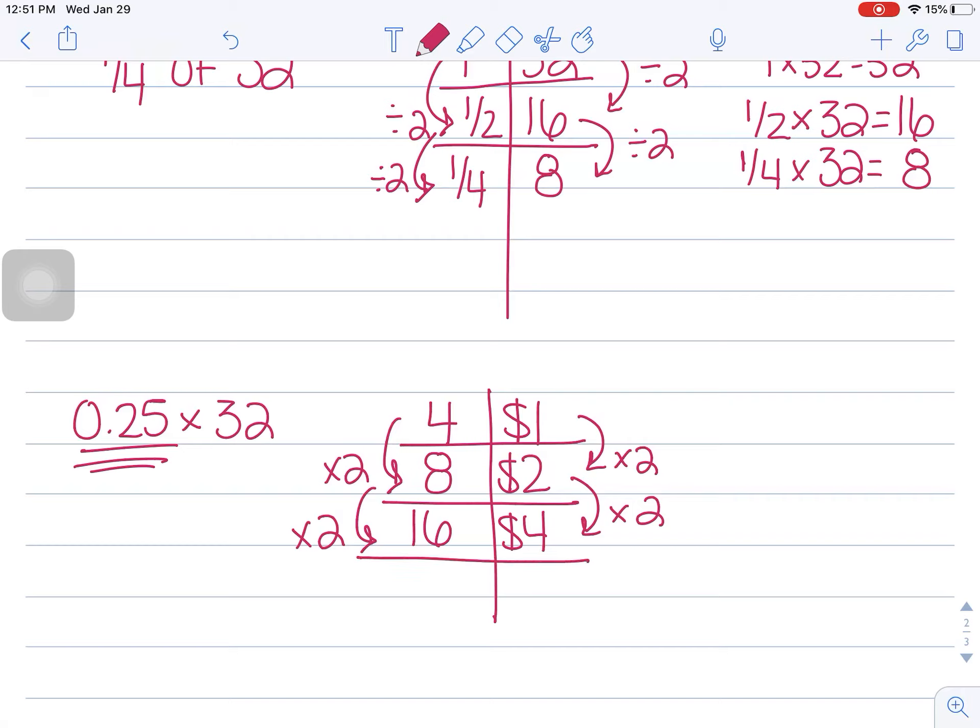I'm going to go ahead and double 16 now, which gives me 32, right? Hopefully, you're with me right now. If you're not, just take a second and pause, and you can always rewind to go back. Multiply 4 by 2, and I get $8. Interesting.